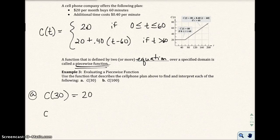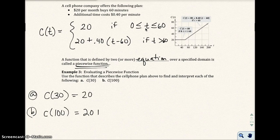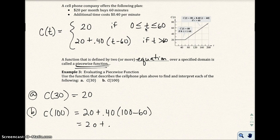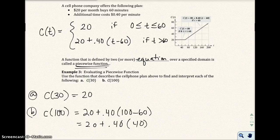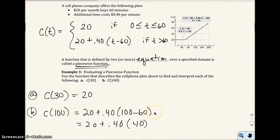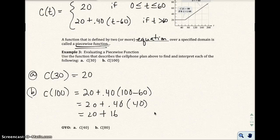What is the cost if it's 100 minutes? Well, your t-value is 100. 100 is definitely greater than 60, so I have to use this function. The cost of 100 minutes is going to be $20 plus 40 cents times 100 minus 60. So it's $20 plus 40 cents times 40. What that means is if you use 100 minutes, you've already paid for the first 60 minutes, that's $20.